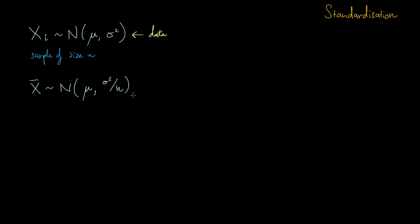You can see why this intuitively makes sense. As n gets very large, the variance of this distribution gets very small. This tells us that if we take a very large sample — approaching the size of the population — the sample mean will be very close to the population mean. A smaller sample allows for more variance of our sample mean around mu. We call this the sampling distribution.